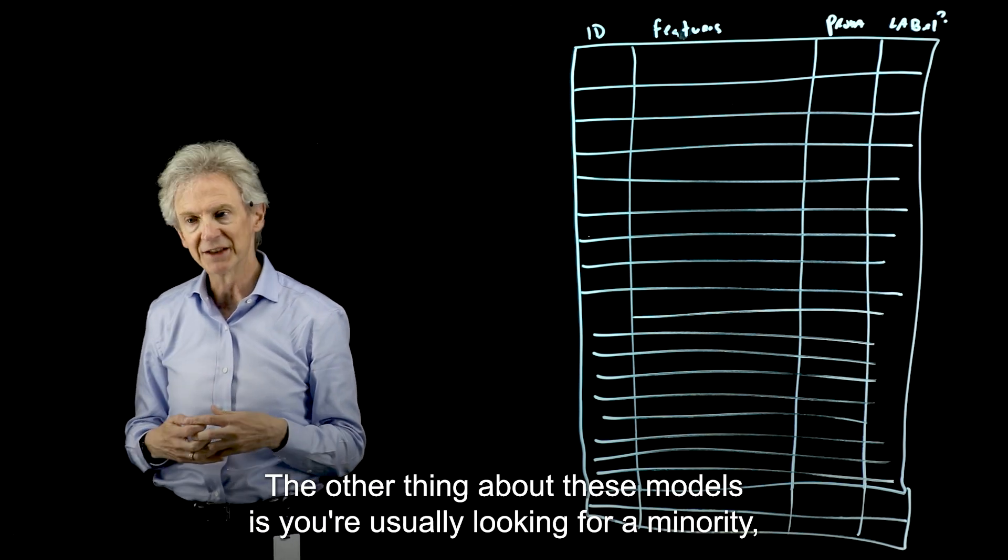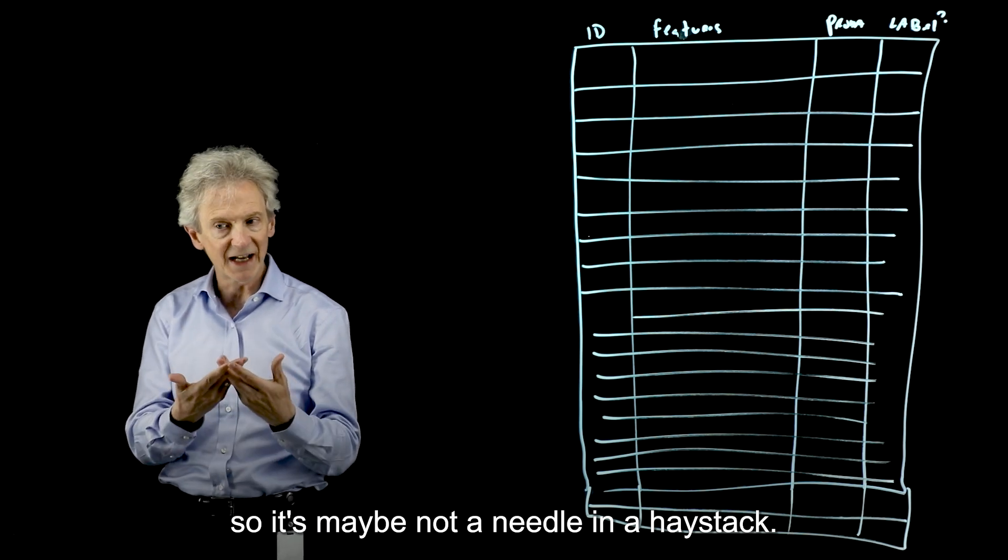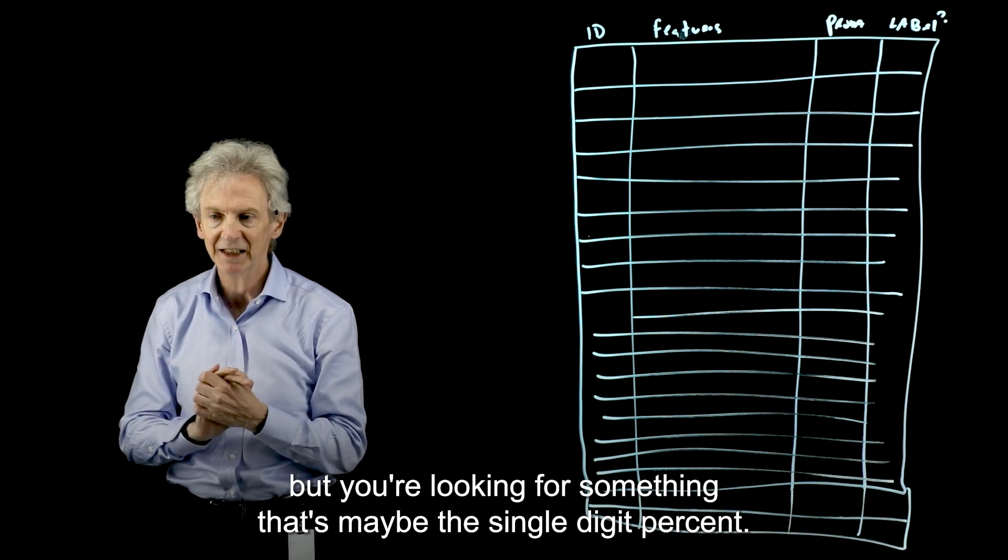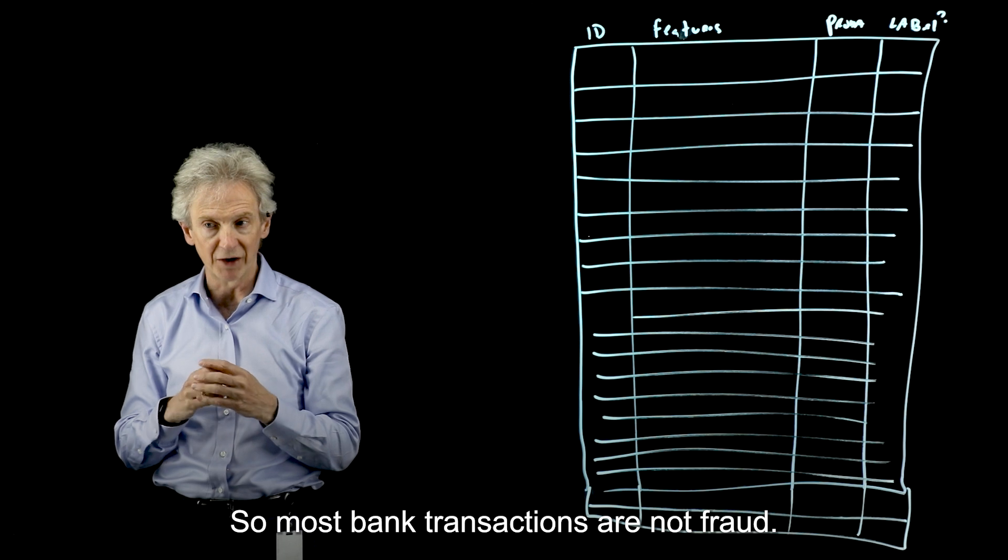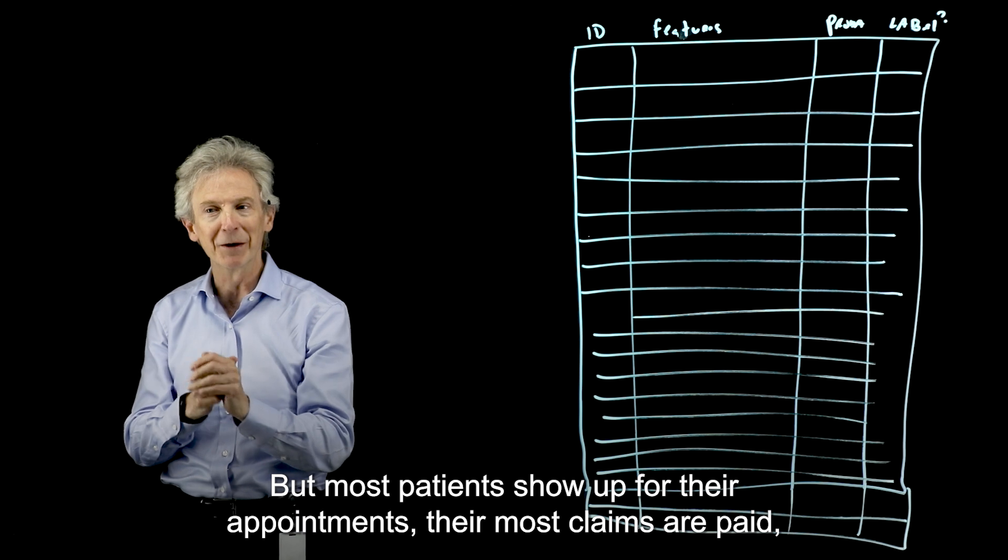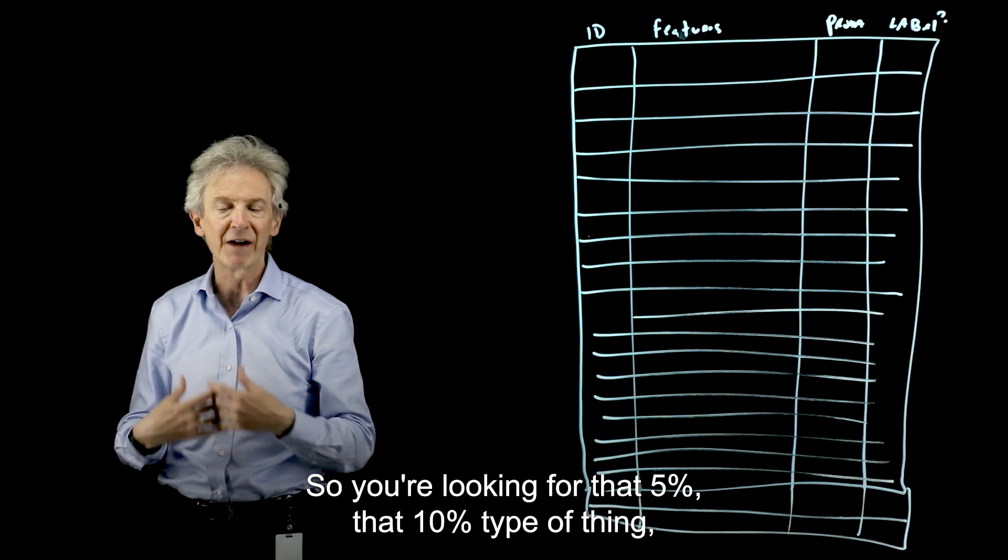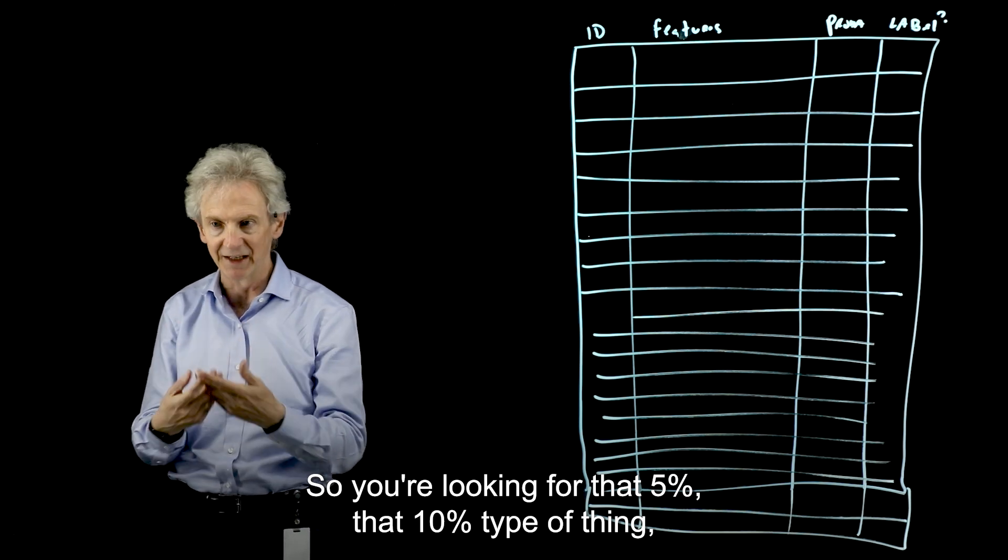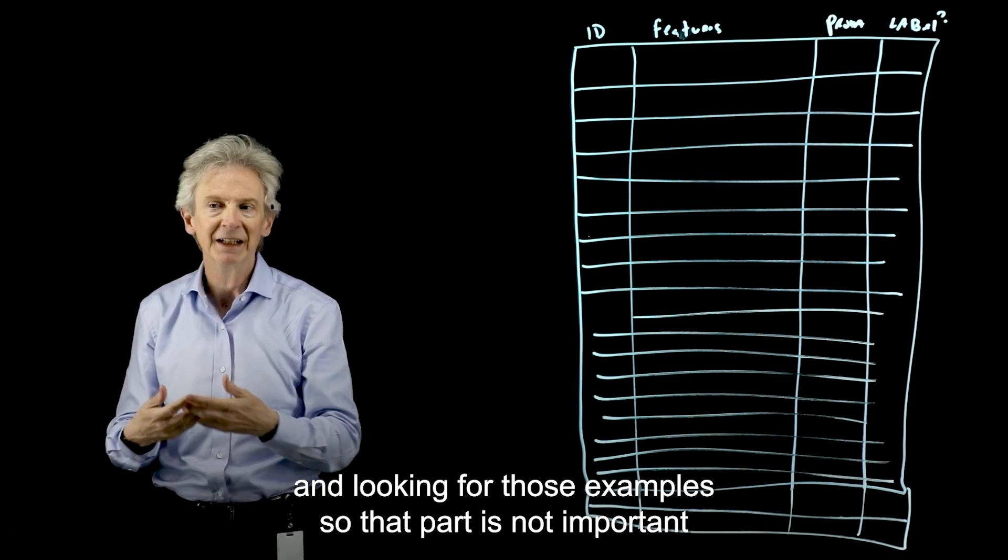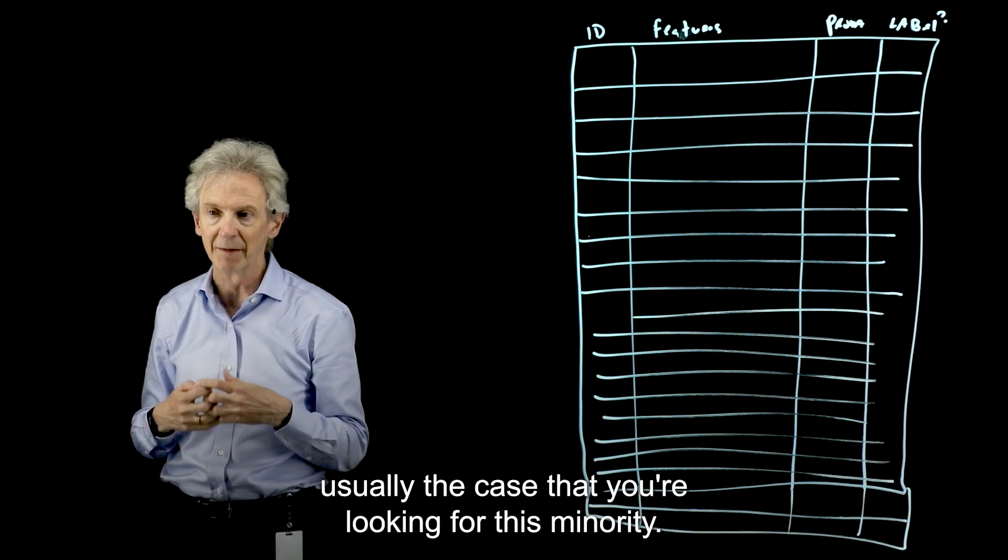Now, the other thing about these models is you're usually looking for a minority. So it's maybe not a needle in a haystack, but it could be. But you're looking for something that's maybe the single-digit percent. So most bank transactions are not fraud. Most email is not spam. Most patients show up for their appointments or most claims are paid. So you're looking for that 5%, that 10% type of thing. That part's not important to this, but it's usually the case that you're looking for this minority.